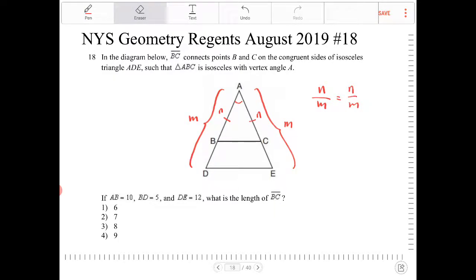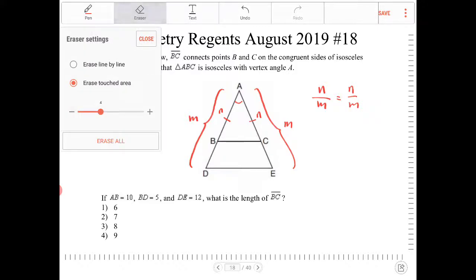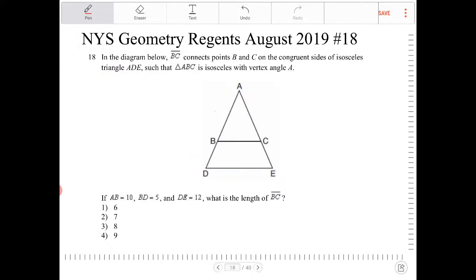Well, we know that AB is equal to 10. So I want to get rid of these markings here. I know that AB is equal to 10, BD is equal to 5, DE is equal to 12. And we're asked to find out what BC is.